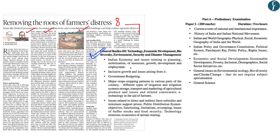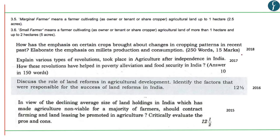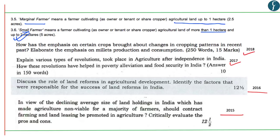Let us go through some of the questions asked in the Mains examination on various issues pertaining to Indian agriculture. Different questions have been asked by UPSC in 2018, 2017, 2016 and 2015, making this topic extremely important. One thing we should know is the difference between marginal farmer and small farmer. A marginal farmer means a farmer cultivating agricultural land up to one hectare, and a small farmer means a farmer cultivating agricultural land of more than one hectare but up to two hectares.